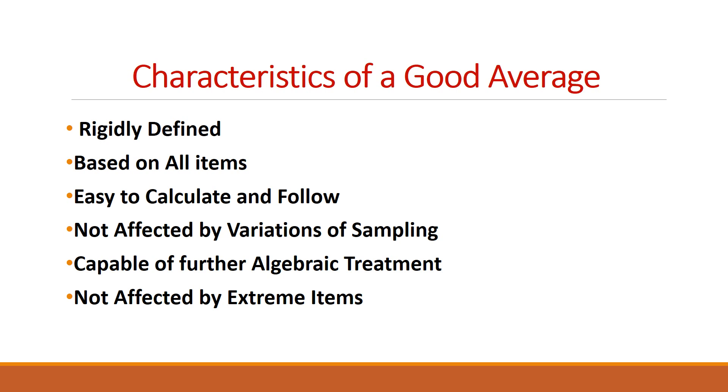And the next one is, each should not be affected by the extreme values. Each and every item should affect the value of the average. No item should affect the average unduly. That is the point to be noted here. If one or two very small or very large items unduly affect the average, in that case, the average cannot be a typical one. We cannot say that the average is representing the group.